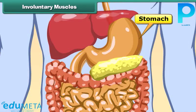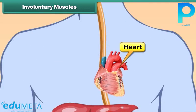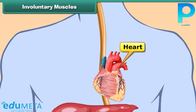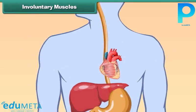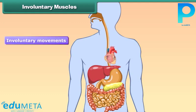The functions of the stomach, intestines, and heart go on in a fixed manner. The functioning of these organs is not dependent on our wishes. Such muscles are called involuntary muscles, and their movements are called involuntary movements.